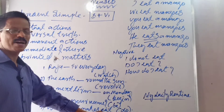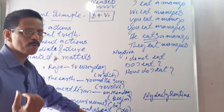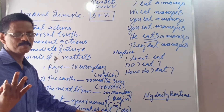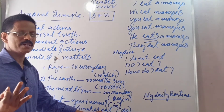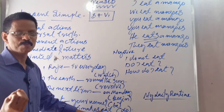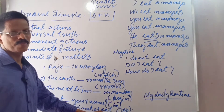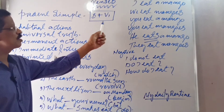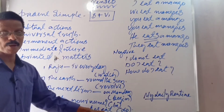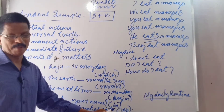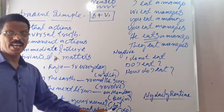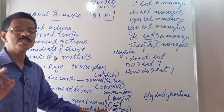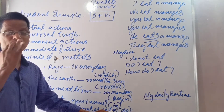You know, a verb has got three forms: V1, V2, V3 — present, past, past participle. So how to write a sentence? S plus V1. Any verb, you have to follow the structure S plus V1.